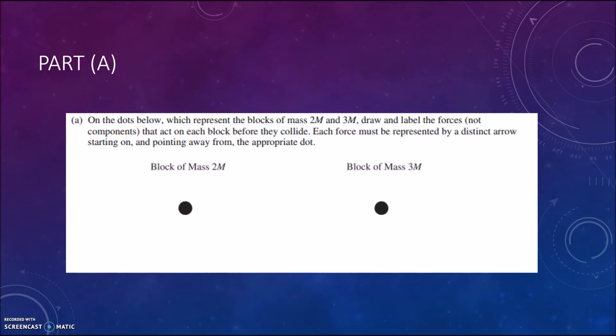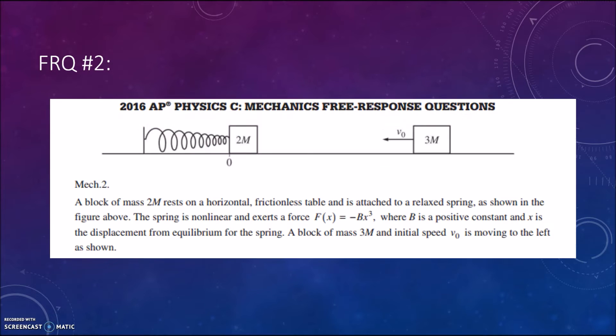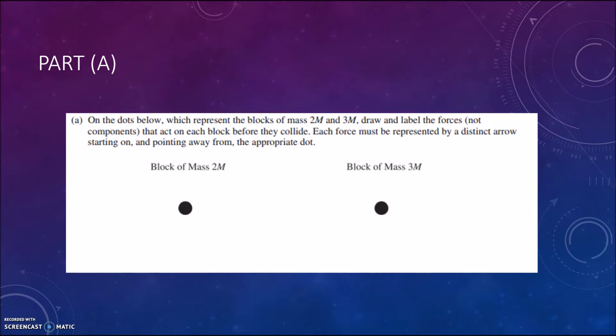The first part asks you to just draw some free body diagrams. Now for the blocks of mass 2m and mass 3m you can see in this picture back here that before the collision the force diagrams for them will obviously just be the force of gravity acting down on both of them. For the block of mass 2m it's going to be 2mg and for the block of mass 3m it's 3mg.